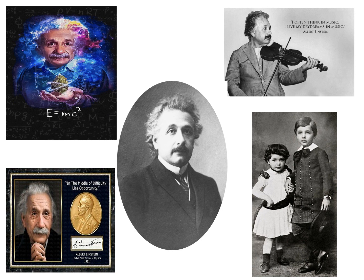We can see Albert Einstein and the formula that he invented, E is equal to mc square. Another picture shows the Nobel Prize that was received by Albert Einstein in 1921 — this is the Nobel Prize for Physics. In the third picture we see him playing the violin and in the fourth with his sister.